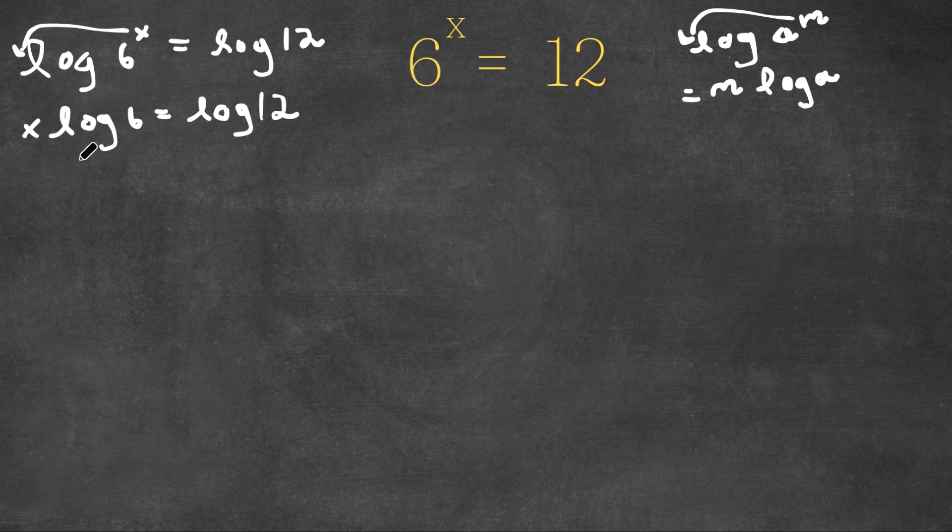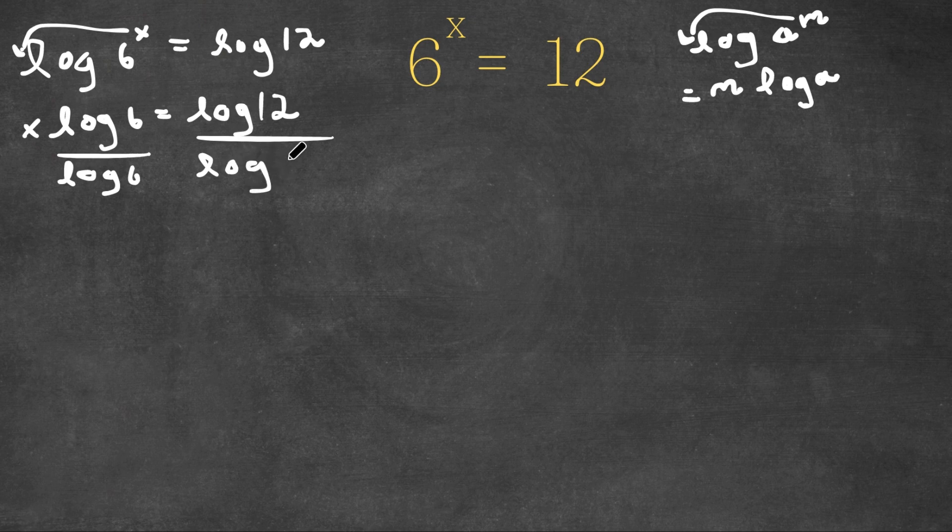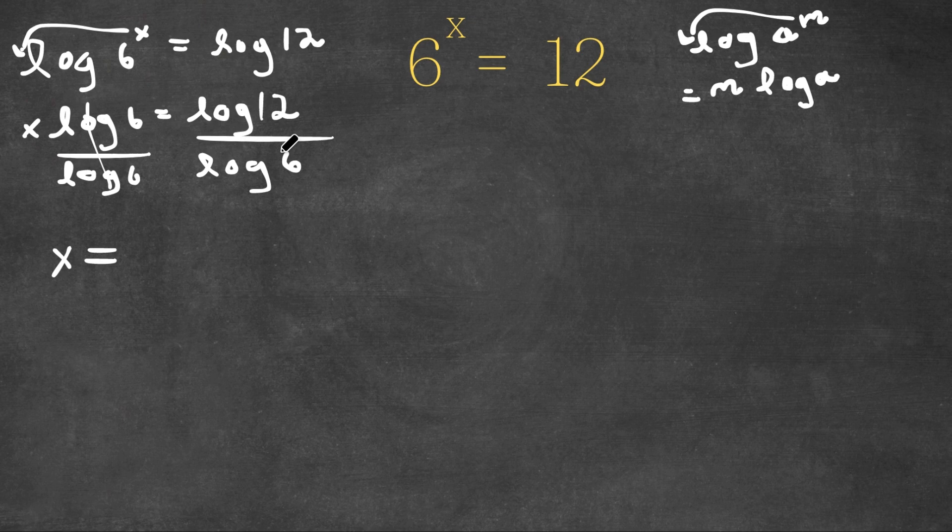Now, we want to isolate x. So I'm going to divide both sides by log 6. So now these two cancel out and we are left with x is equal to log 12 over log 6.